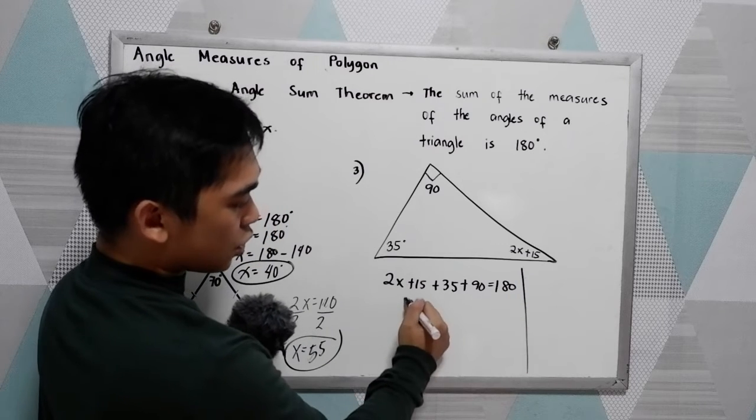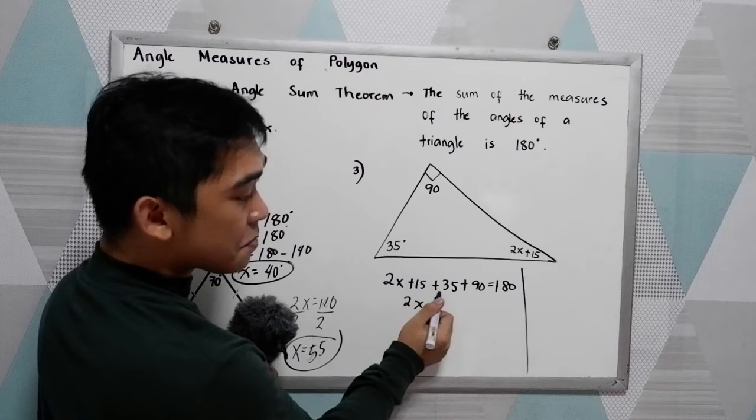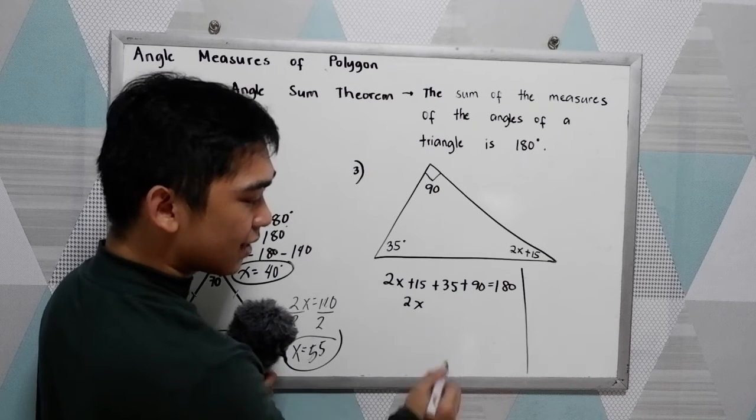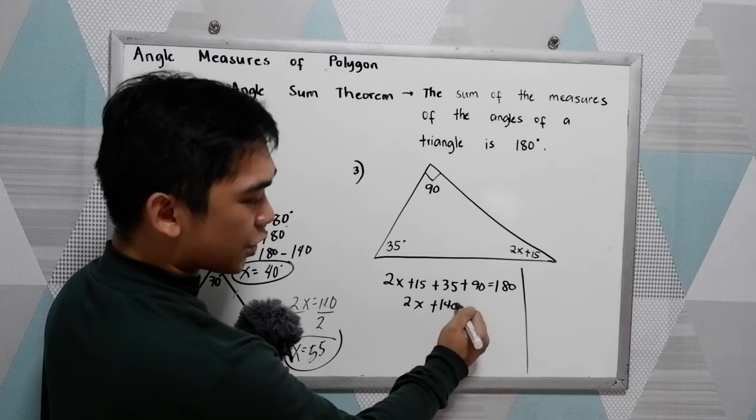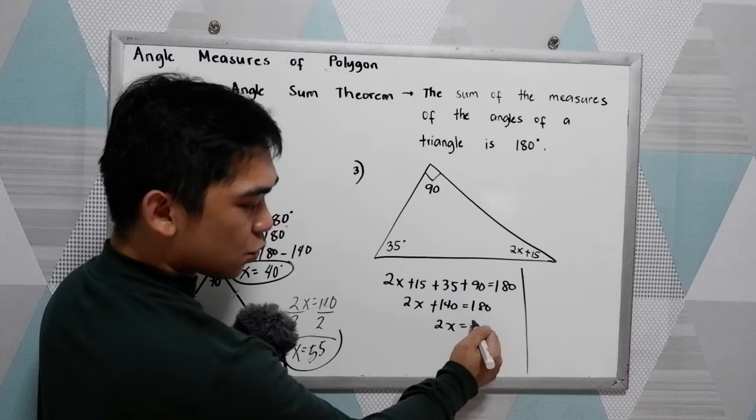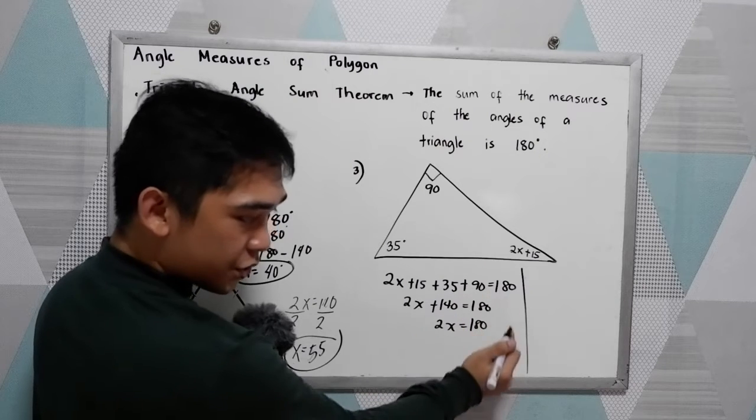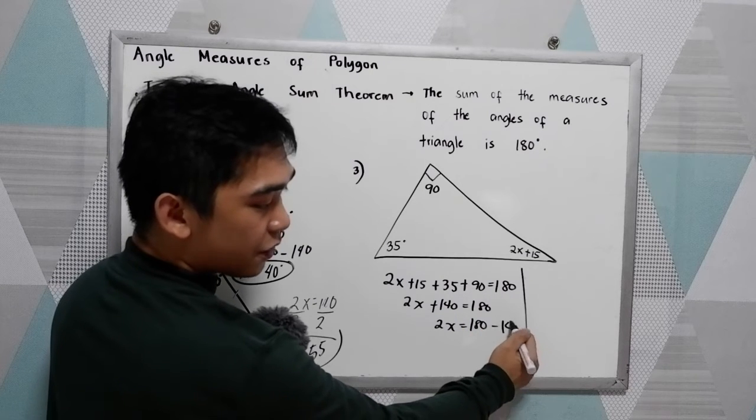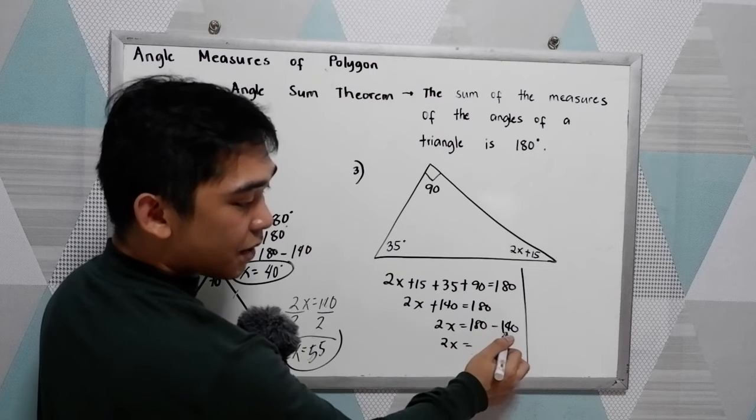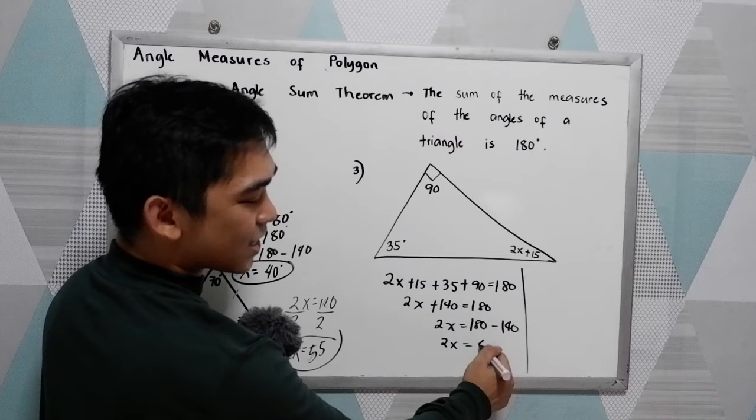Now we have 2x. So 15 plus 35, that is 50. Plus 90, that is 140. Is equal to 180. Now we have 2x is equal to 180. Move to the right. That will become negative 140. So 2x is equal to 180 minus 140. That is 40.